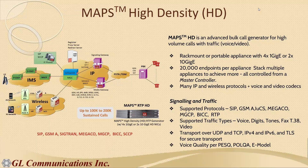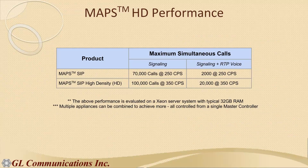Comparing traditional MAPS versus MAPS HD, you can see improvement in calls per second and simultaneous calls. For signaling and RTP voice: traditional MAPS can make 2,000 sessions at 250 calls per second; with MAPS HD, that increases to 20,000 sessions at 350 calls per second — per appliance. You can stack these appliances controlled by a single master controller, expanding to 40,000, 60,000, and so on.